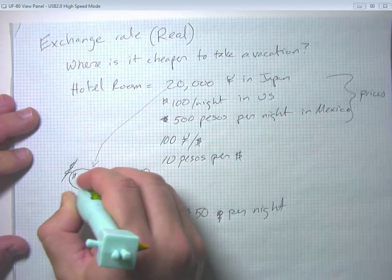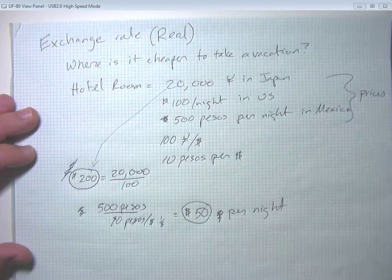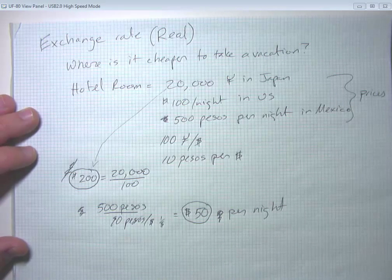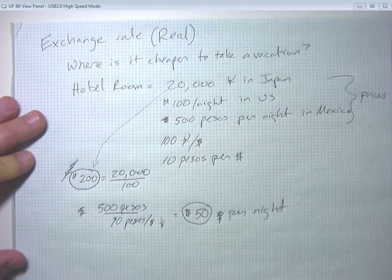So the price of a hotel room in Japan is $200 per night. The price of a hotel room in Mexico is $50 per night. And we can see that it's cheaper to take our vacation in Mexico, leaving aside airfare, of course, and all that kind of stuff.